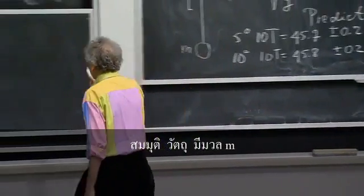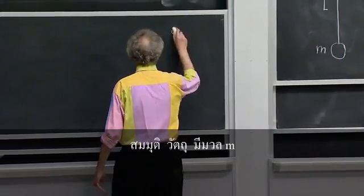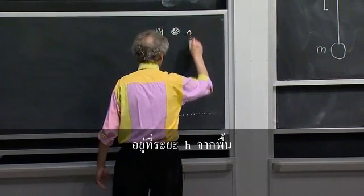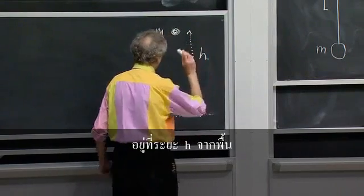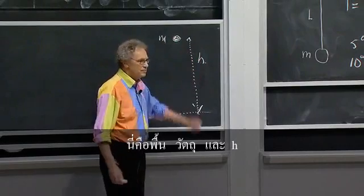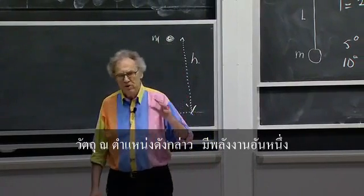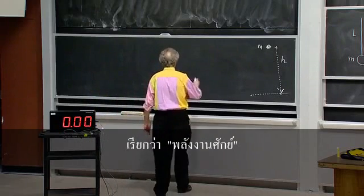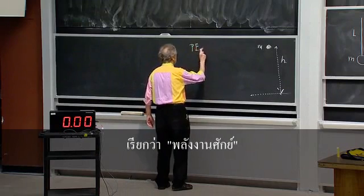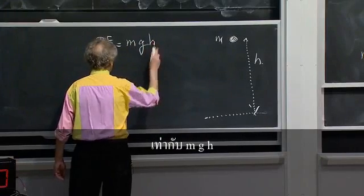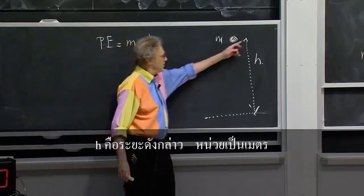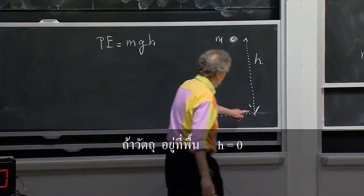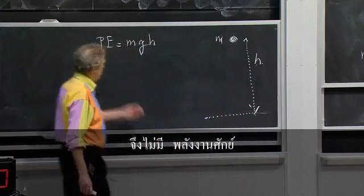Suppose the object has a mass m and is a distance h from the floor. We associate with the position of that object an energy that has a name. We call that potential energy, and that potential energy is mgh. You already know what g is. h is this distance in meters. So when the object is here on the floor, h is zero, so there is no potential energy.